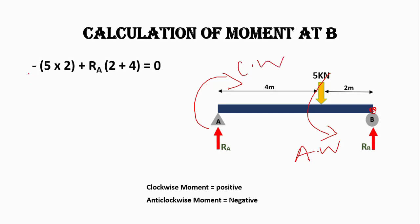Our equation becomes minus 5 × 2 — the minus sign means it is in the anti-clockwise direction, 5 is the load, and 2 is the moment arm — plus RA × (2 + 4). The positive sign means this resists in the clockwise direction. RA is the support reaction and (2 + 4) is the moment arm from B to A. This equation gives 6RA = 10.